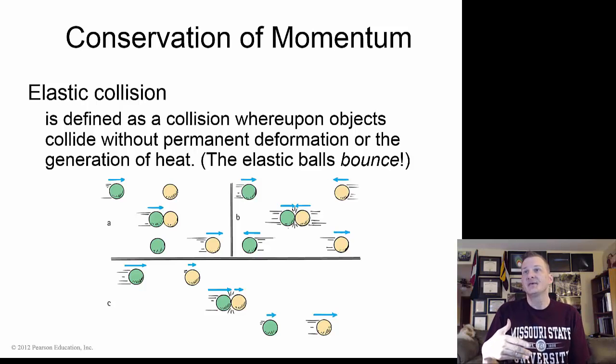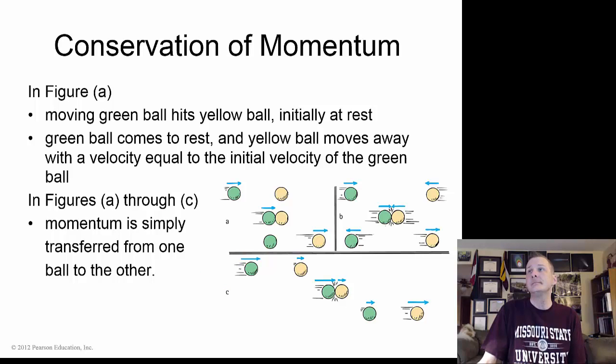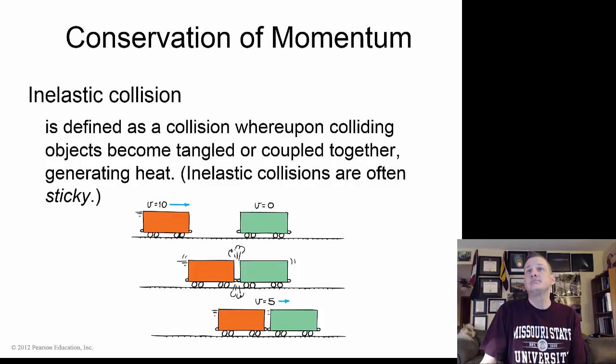In an elastic collision, this is where objects collide without permanent deformation or the generation of heat, where we have like these bouncing balls together. In an inelastic collision, this is where these train cars collide and stay together and link up. This is an inelastic collision. They don't bounce off. They call it sticky.